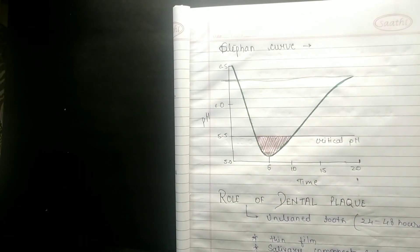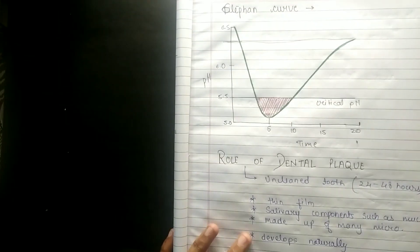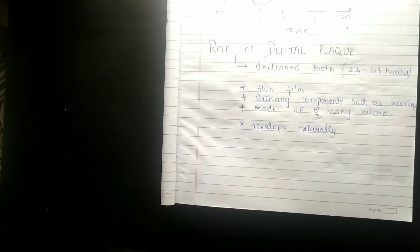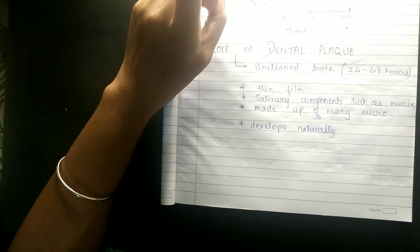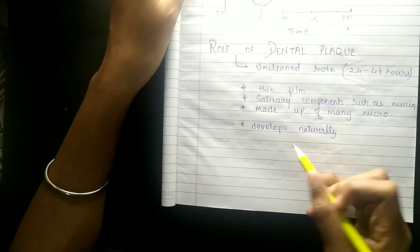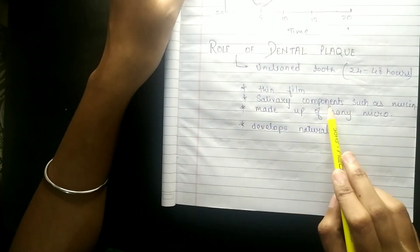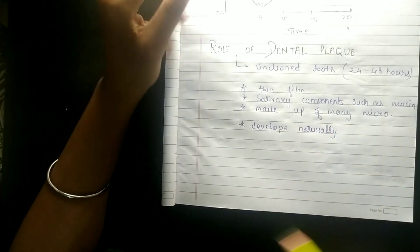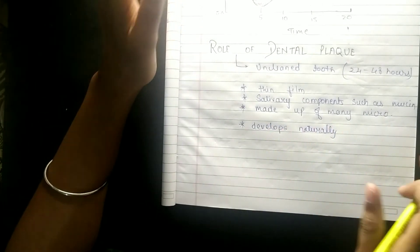Now coming to the role of dental plaque - how will it be? Unclean tooth, so it will be dental plaque within 24 to 48 hours. This is thin film, it is made up of many microorganisms obviously, and it develops naturally.